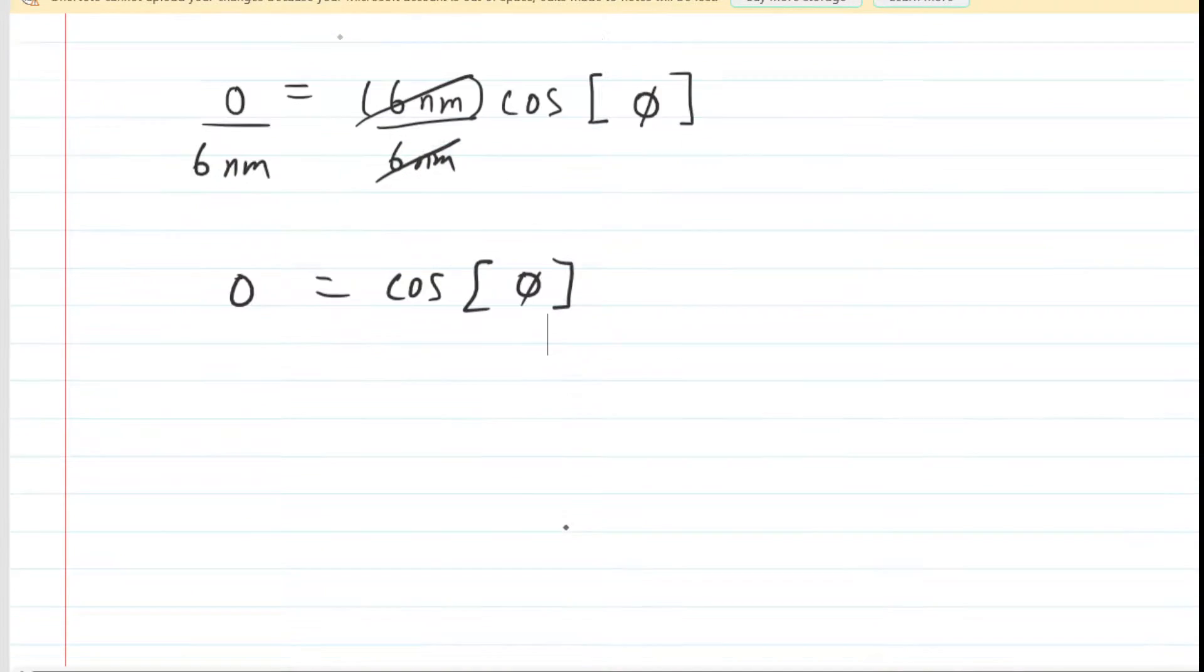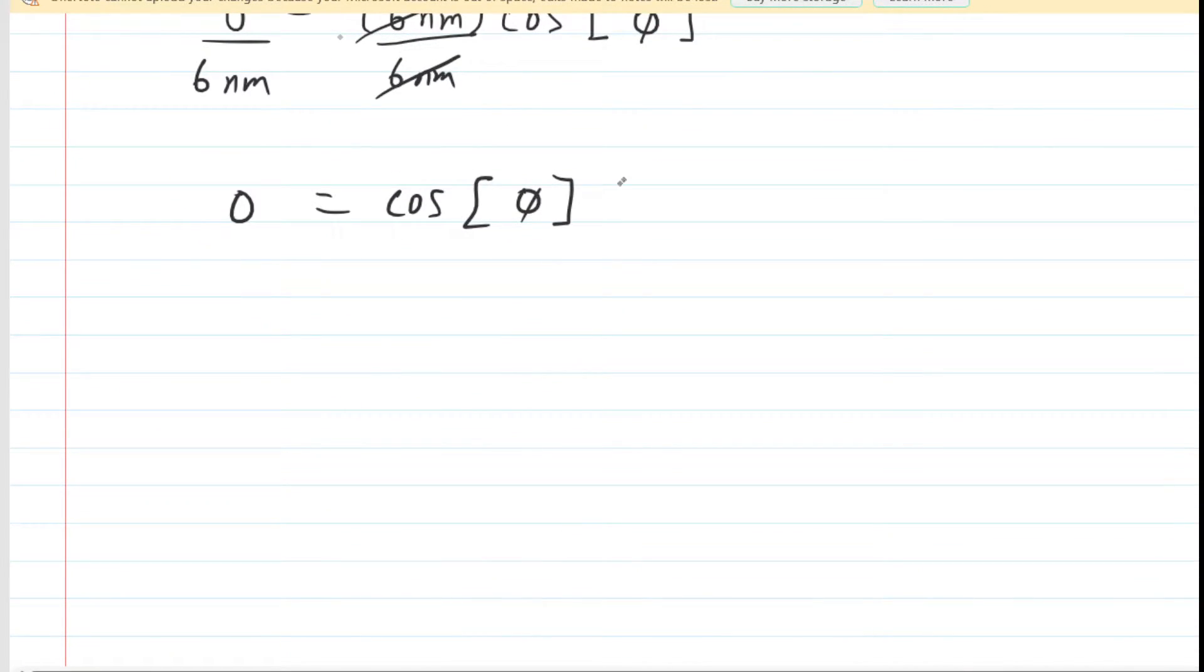And then at this stage, you have to ask yourself, what angle has a cosine equal to 0? What's the smallest, simplest angle whose cosine is equal to 0? And hopefully we know from trigonometry that if the angle was equal to π over 2 radians, then the cosine of that angle would equal 0.